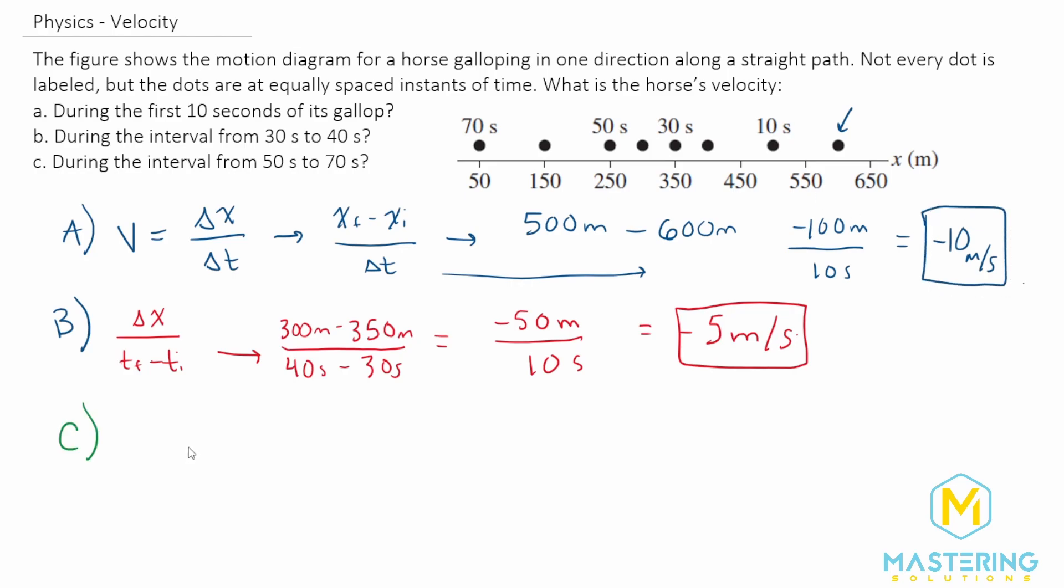For part C, same thing, only we want to know where it is from 50 to 70 seconds. So the delta t, the final is 70 seconds minus t initial, which is 50 seconds.